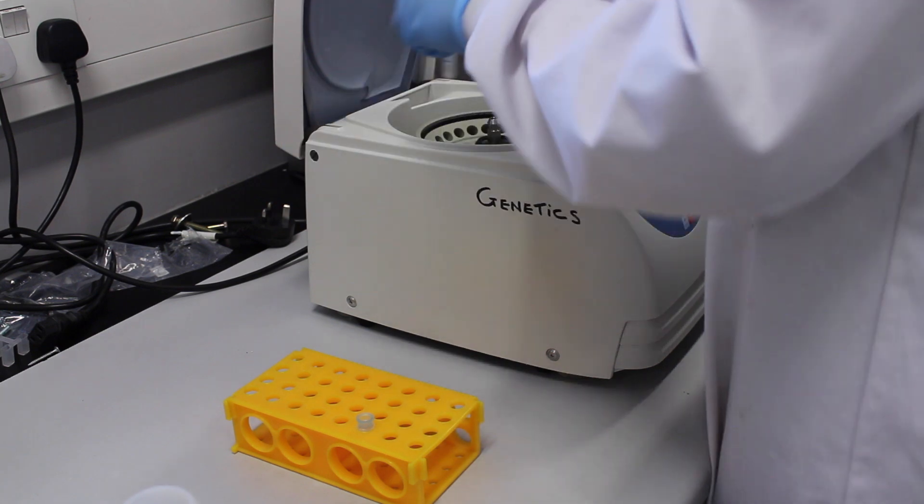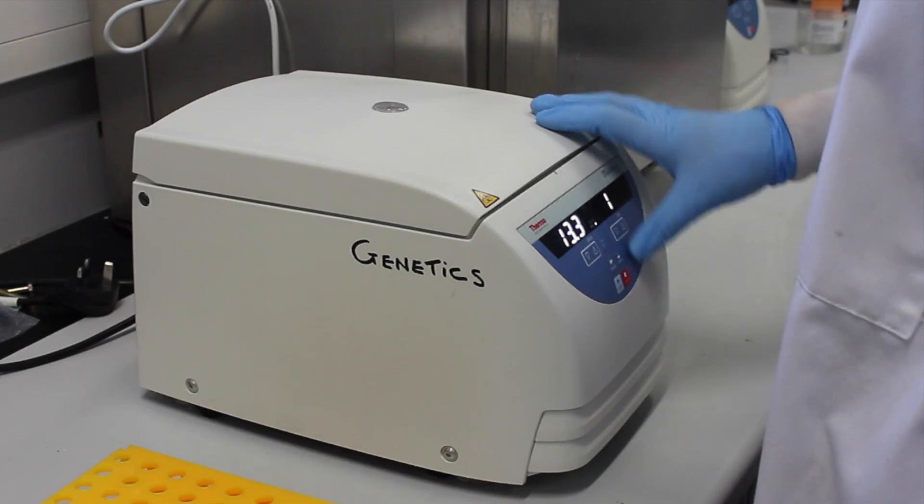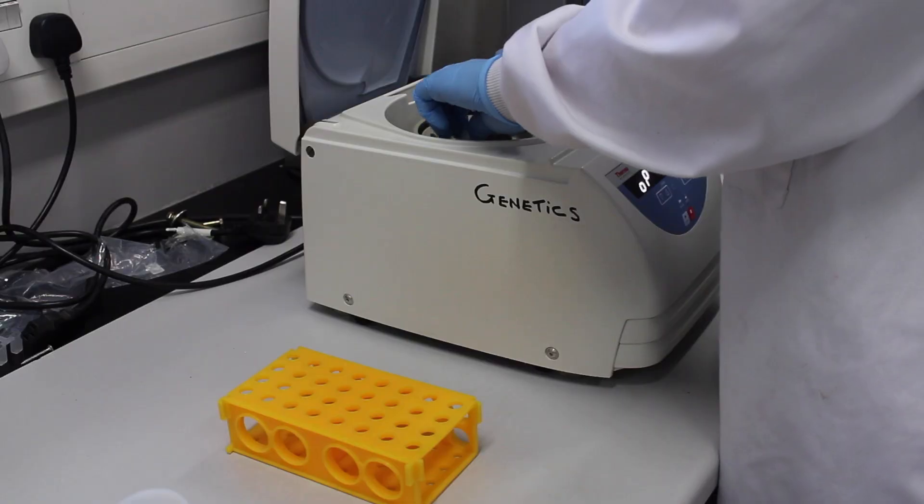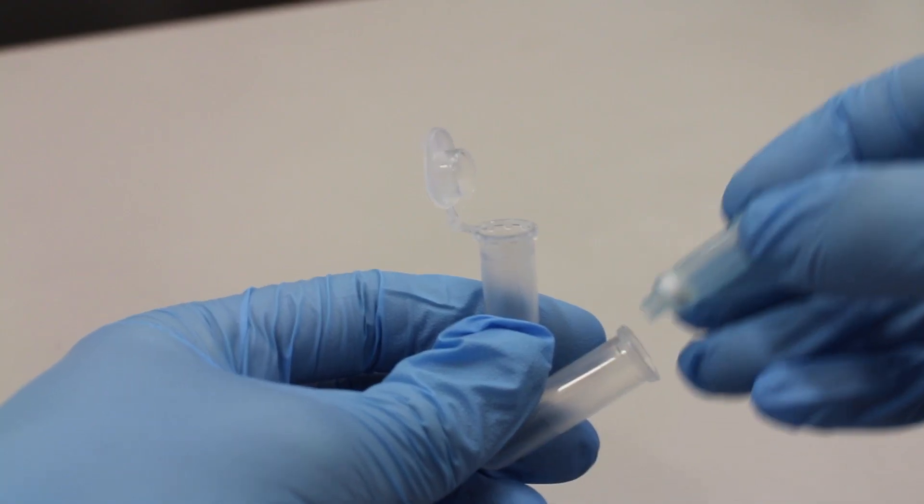The columns are again centrifuged at top speed for 1 minute. The columns are then transferred into empty Eppendorf tubes.